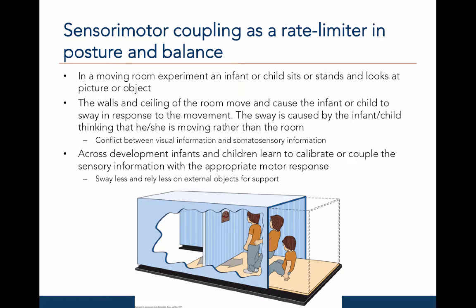As mentioned, balance is a rate limiter in motor development. In a moving room experiment, an infant or child sits or stands and looks at a picture or object on a wall. The walls and ceilings of the room move, causing the infant or child to sway in response to that visual movement. This sway is caused by the infant thinking he or she is moving rather than the room, creating a conflict between visual information and somatosensory information. Across development, infants and children learn to calibrate sensory information with the appropriate motor response, resulting in a reduction of sway and less reliance on external objects for mechanical support to maintain balance.